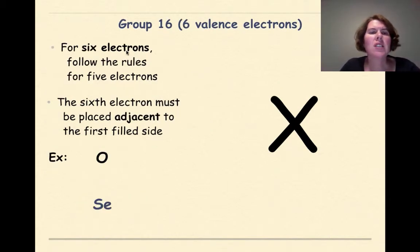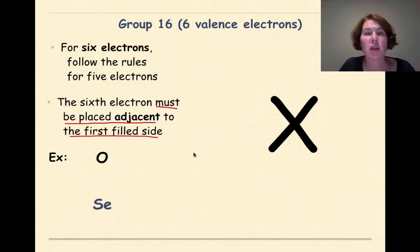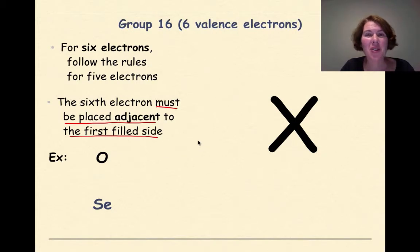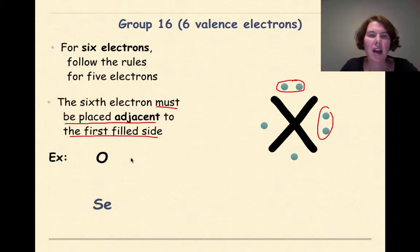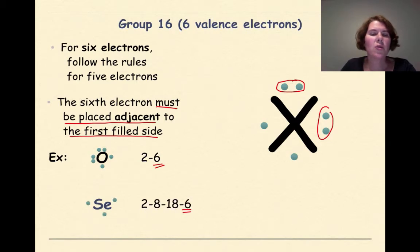Group 16 has 6 valence electrons. Follow the rules for 5 electrons, but the 6th electron must be placed adjacent to the 1st filled side. This matters especially when we get to the bonding of a water molecule — water has to be bent and polar. So for group 16: 1 filled side, then the 6th electron creates a 2nd filled side adjacent to the first. Oxygen is 2, 6 — 6 valence electrons. Selenium is 2, 8, 18, 6 — also 6 valence electrons.